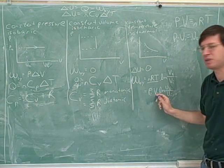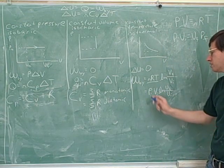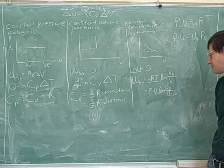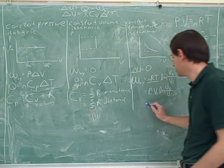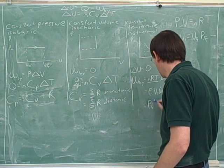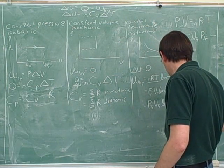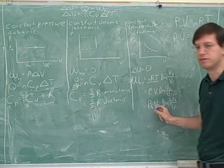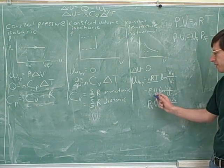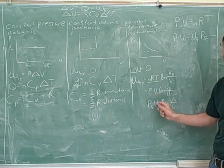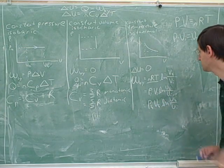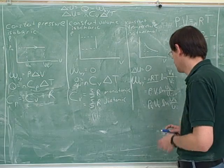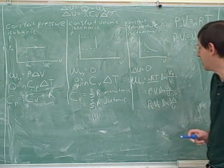So you could do it like this, P initial times V initial, or you could do P final times V final. Over here, you have to use V final and V initial, but this could either be P initial, V initial, or it could be P final and V final. Which one would you use? Well, whichever one gave you the information that you were given in the problem would be more convenient.